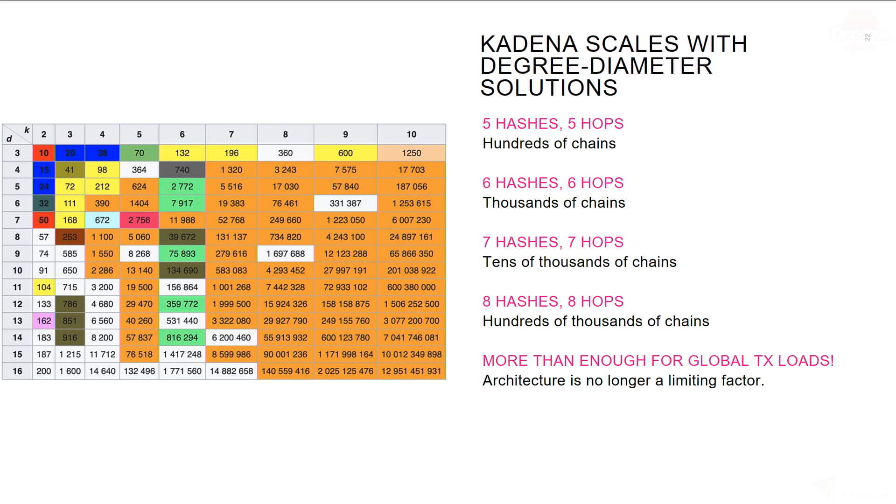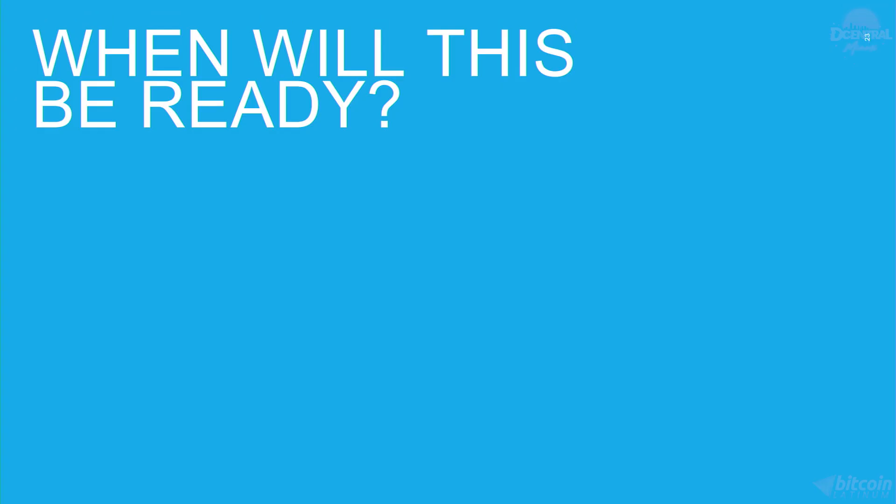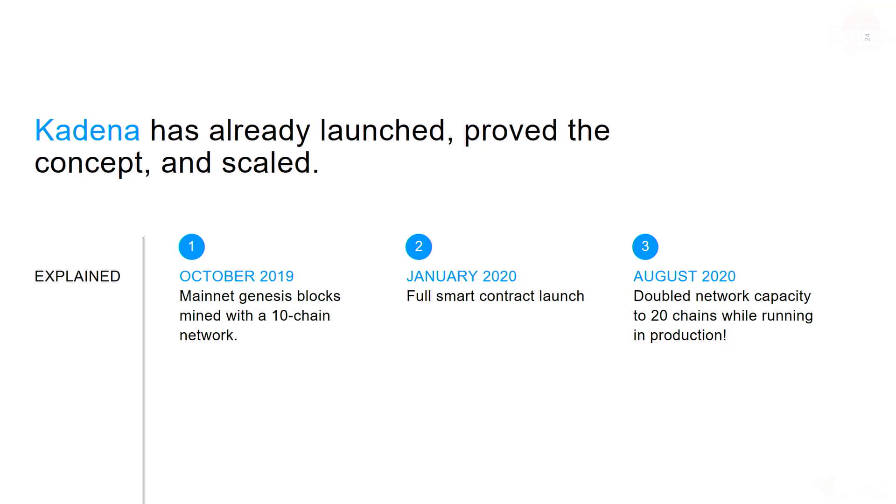I can hear people ask, when will this be ready? Kadena has already launched. We launched this network a little over two years ago in October 2019 with a 10 chain network. In January of 2020, we had full smart contract support go into effect. And then in August of 2020, we doubled our network capacity to 20 chains while we were running in production.